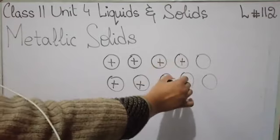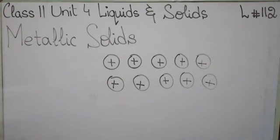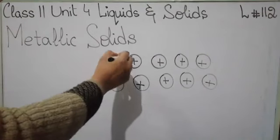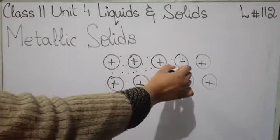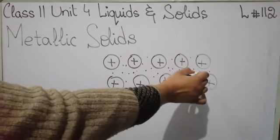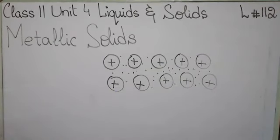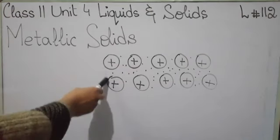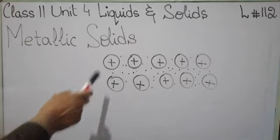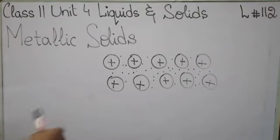These outermost electrons leave their atoms throughout the full internal structure of the metallic solid. When the electron comes out, the atoms develop a positive charge — they become cations. This positive charge develops throughout the metallic solid, and the free electrons remain present in their surroundings.